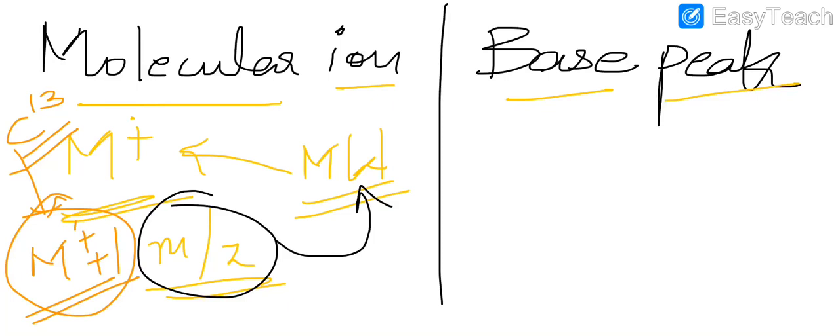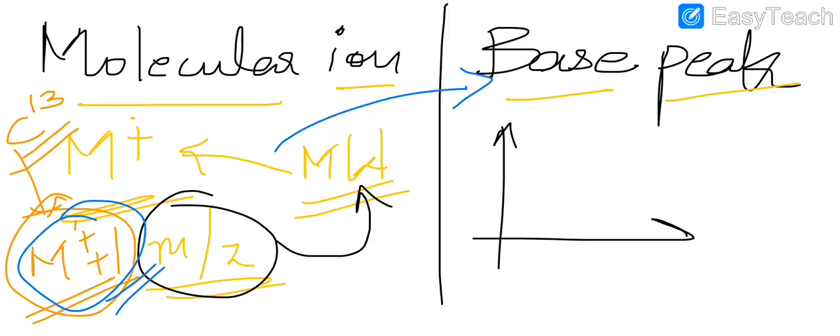You do see a small minuscule peak at M+1. Routinely, to compare and contrast that with the base peak, how exactly is it different from the base peak? A mass spec is usually a plot of relative abundance to that of the m/z.